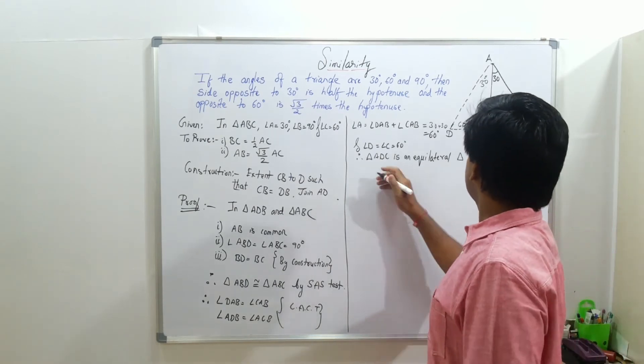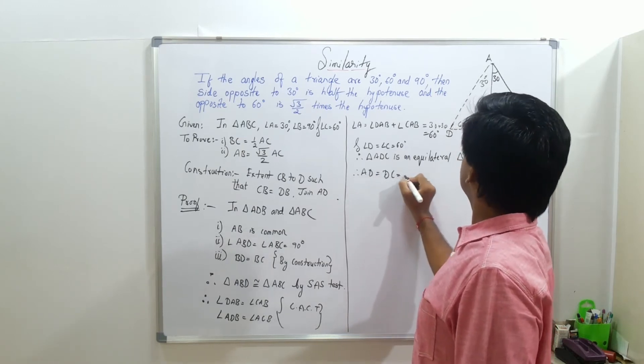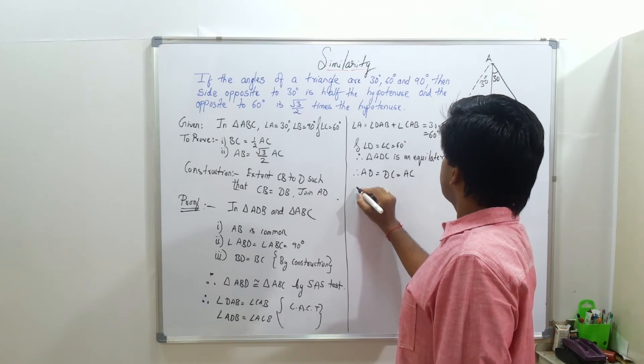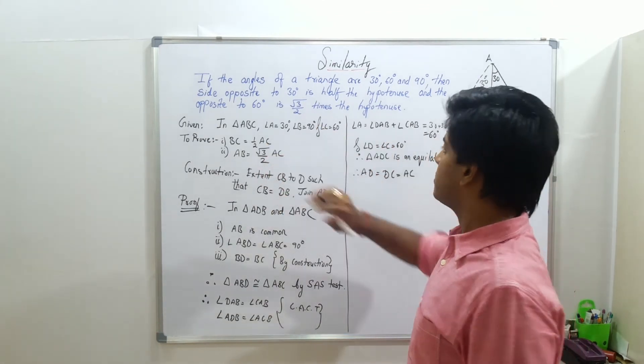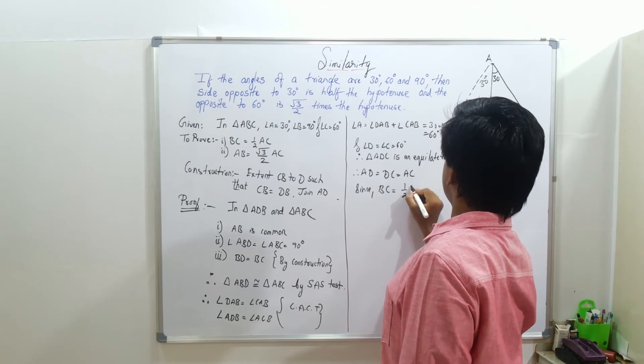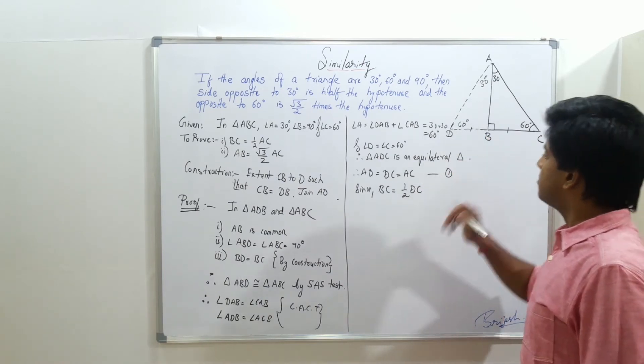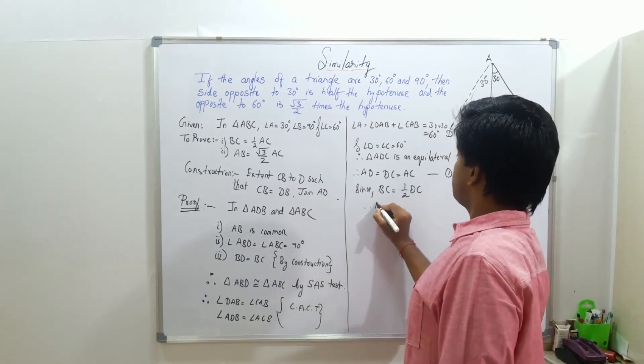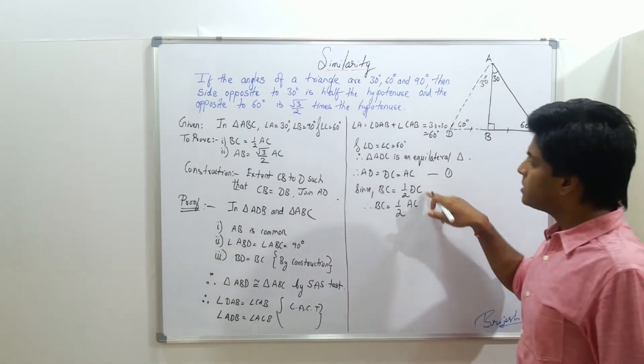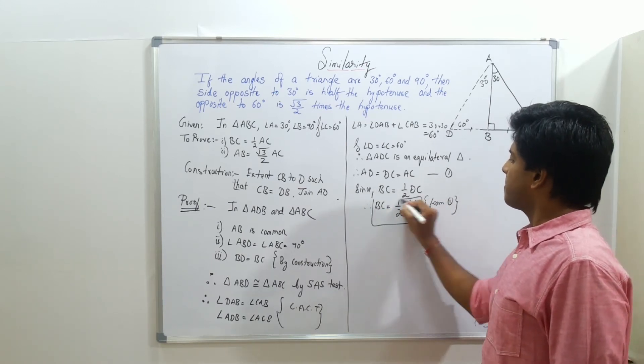If it is equilateral, then AD equal to DC equal to AC. Now, since BC equal to half of DC, but DC equal to AC, therefore I can say that BC equal to half of AC.